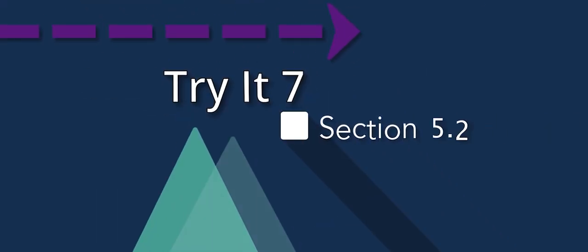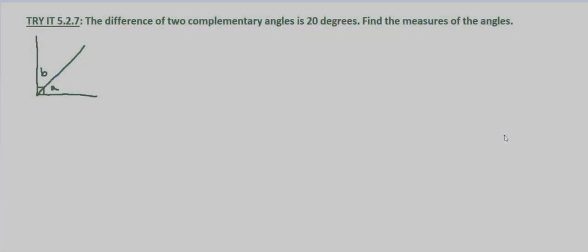In this try it problem, we're told that the difference of two complementary angles is 20 degrees and we're asked to find the measures of the angles.